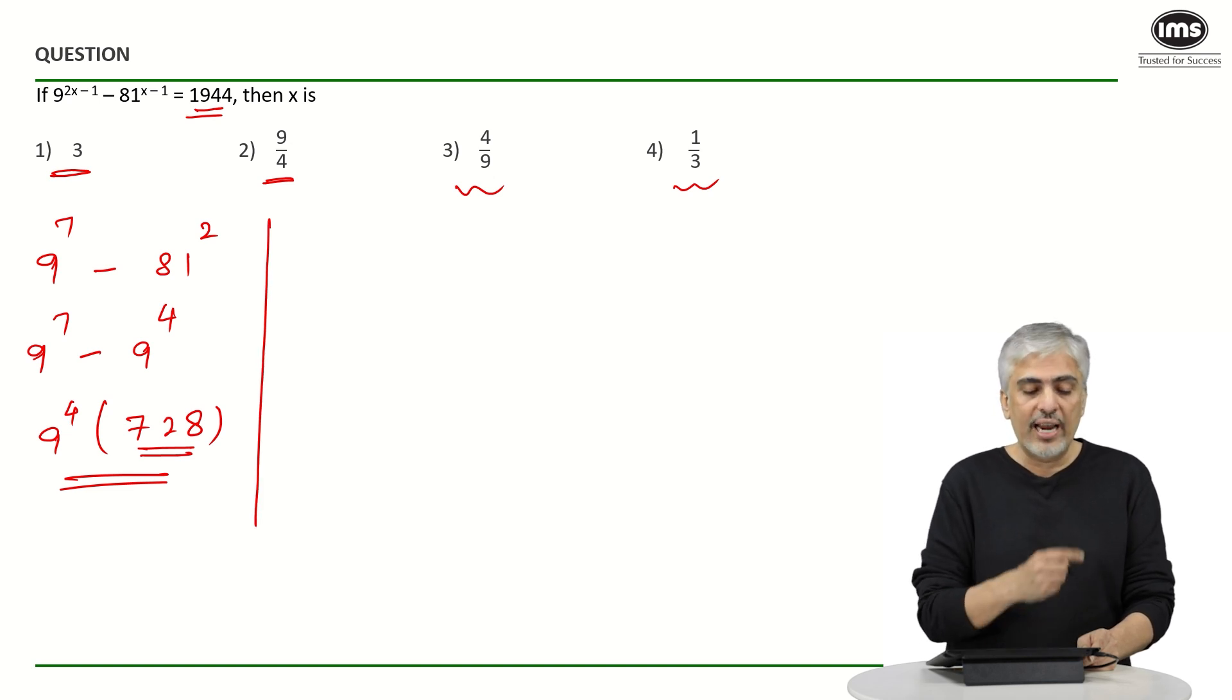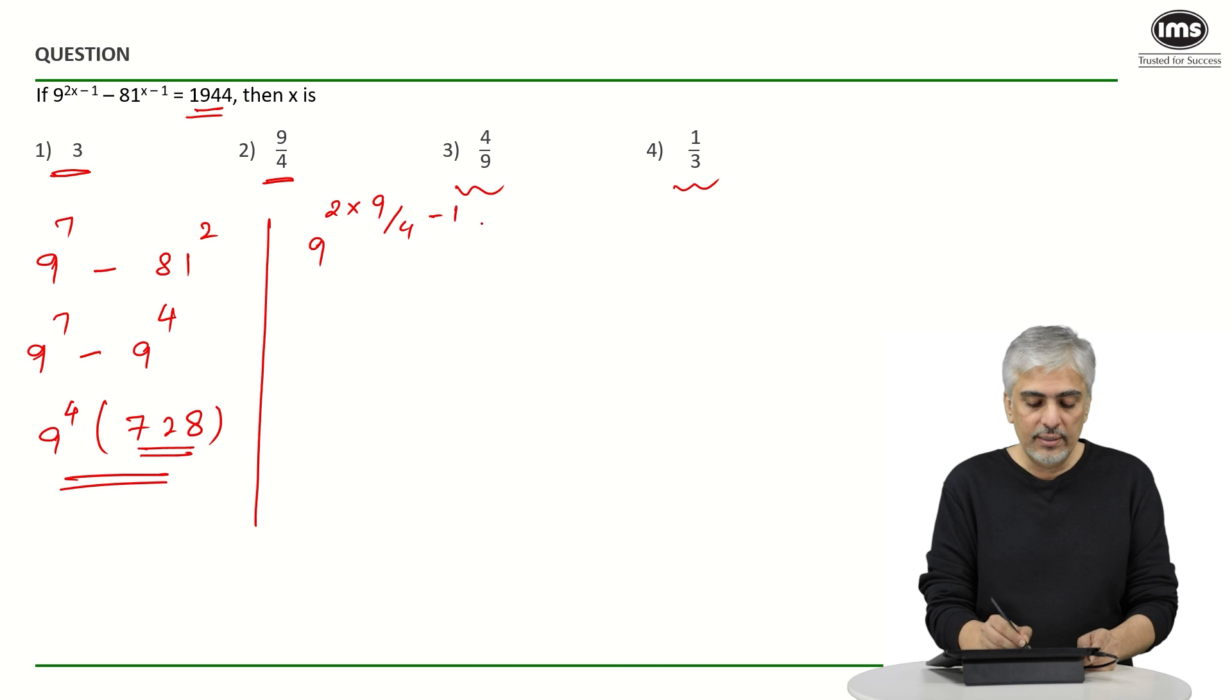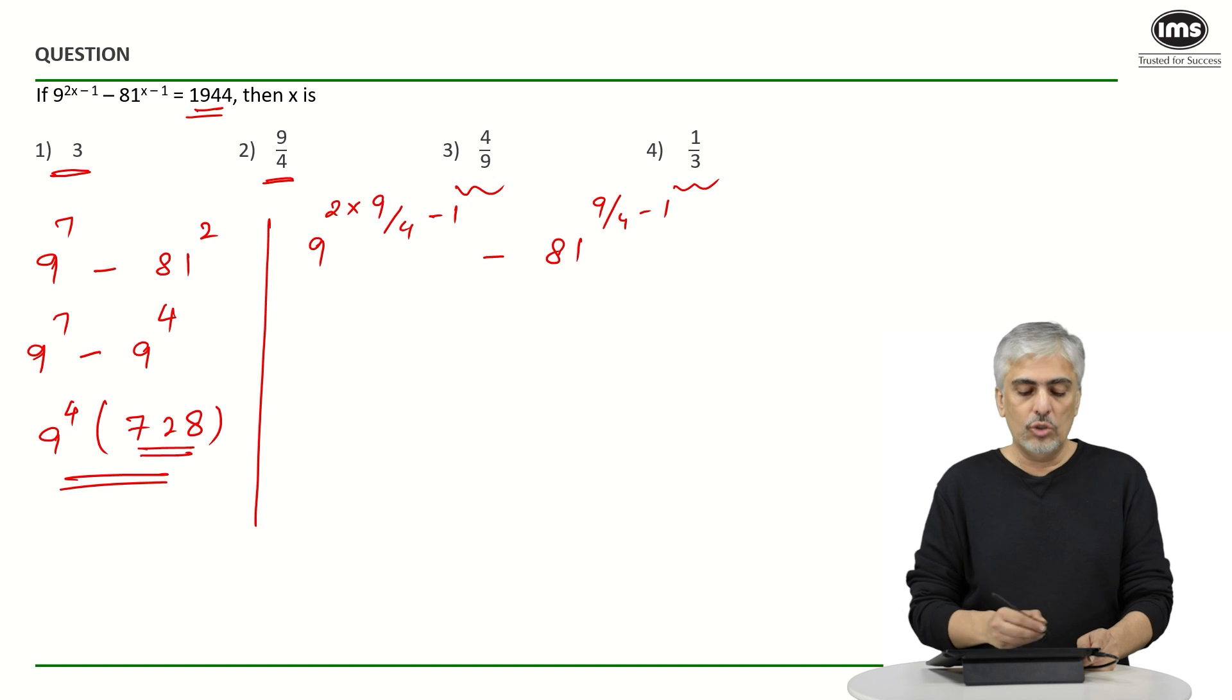Now, let us look at the second option, 9 by 4. So what will I get? I will get 9 raised to 2x, so that is 2 into 9 by 4 minus 1, minus 81 raised to x minus 1, that is 9 by 4 minus 1. So this will become 9 by 2 minus 1. 9 by 2 minus 1 will be 7 by 2.